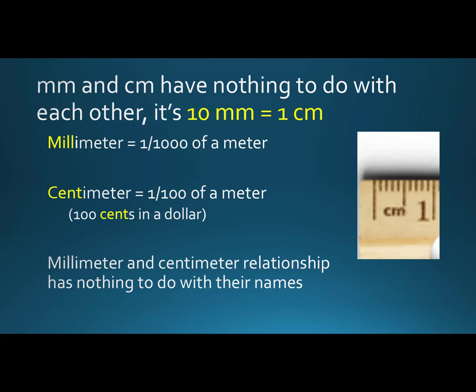A millimeter is one thousandth of a meter. A centimeter is one hundredth of a meter. Both of their relationships are to the meter, not to each other. There are 100 cents in a dollar—that's how you remember the centimeter. Because millimeter and centimeter have no relationship to each other in their names, it's sometimes confusing.